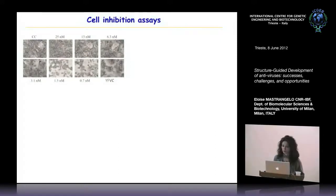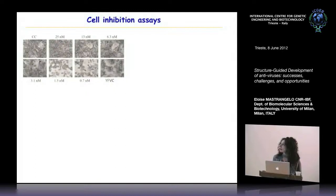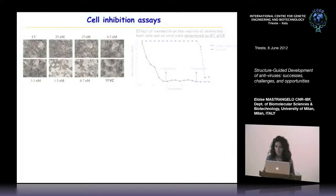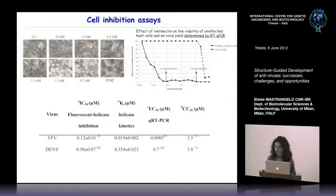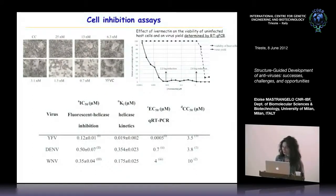We performed cell inhibition assays in collaboration with Johan Neyts in Leuven using yellow fever virus. Increasing amounts of ivermectin progressively protected the cells from the virus. We also measured the effects of ivermectin on the viability of infected host cells and on virus yield by quantitative RT-PCR, finding that ivermectin inhibits the virus with an IC50 in the low nanomolar range — specifically 0.5 nanomolar for yellow fever.